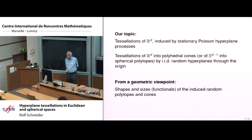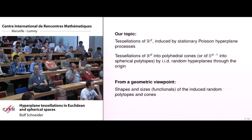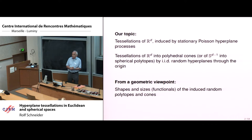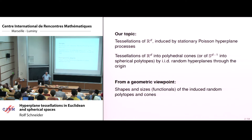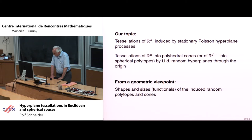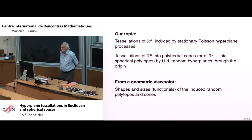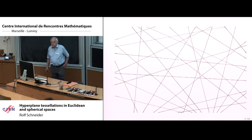The topic is tessellations, more precisely induced by stationary Poisson hyperplane processes, and then in the end the spherical or conical counterpart: tessellations of space induced by random hyperplanes, finitely many random hyperplanes through the origin. I consider this from a geometric viewpoint. As a pure geometer I would ask questions for the sake of their geometric beauty and get useless results as a rule. Essentially I would like to ask for shapes and sizes of the induced random polytopes, sizes in the sense of measuring size by some geometric functionals.